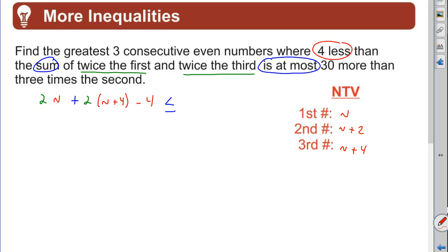Let's do the right side is 30 more. All right, 30 more is plus 30 or you can do 30 and then plus whatever. 30 more than what? Three times. So we have to multiply three times the second. What is the second? N plus two. Okay, there we are. Got our inequality.